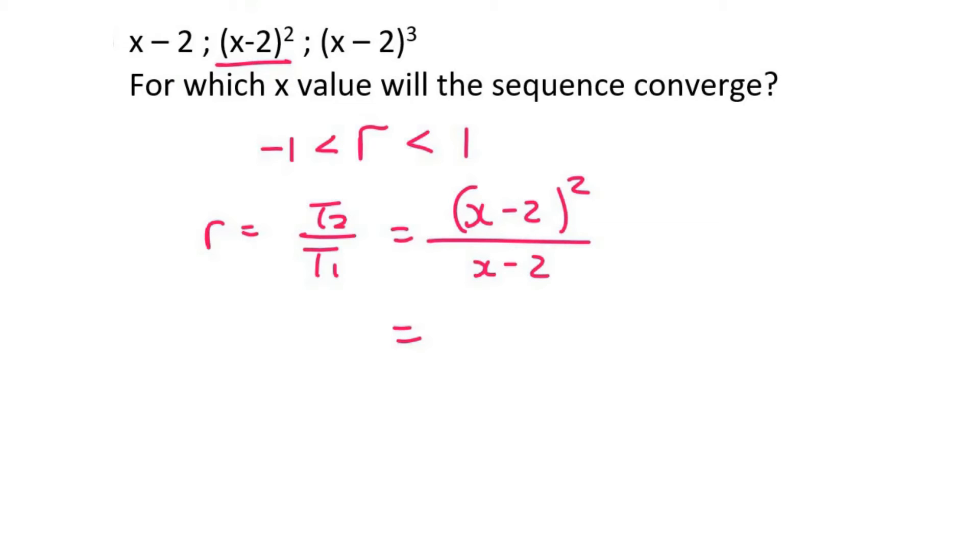Depending on how comfortable you are with this type of maths, you might see this quite easily. But what I'm going to do is I'm going to write the x minus 2 out twice, because that's what this 2 means, and then you can cancel one of them. And so r is x minus 2.